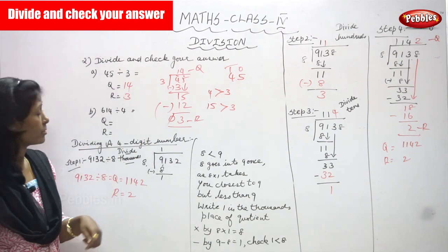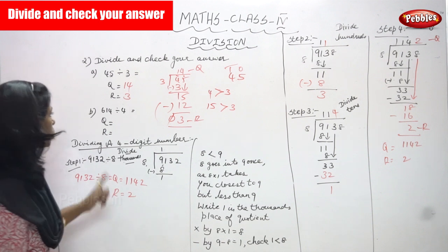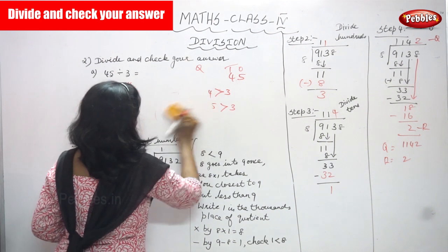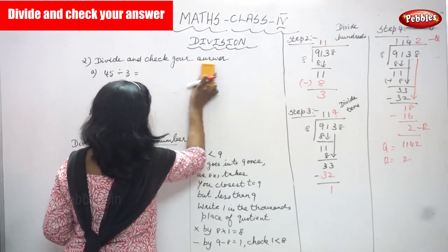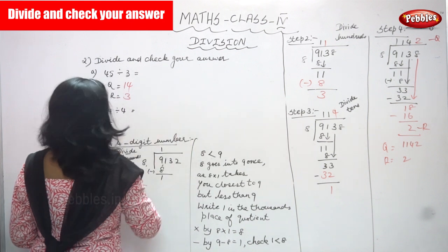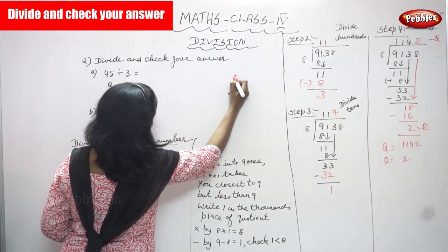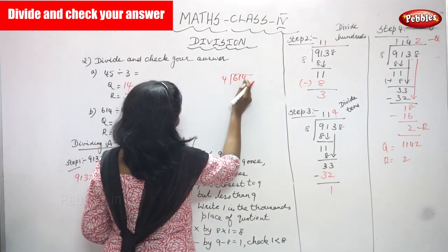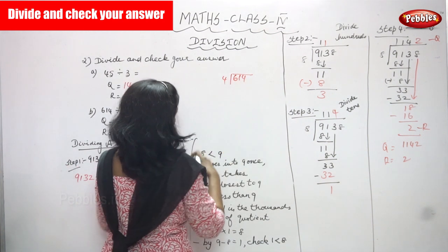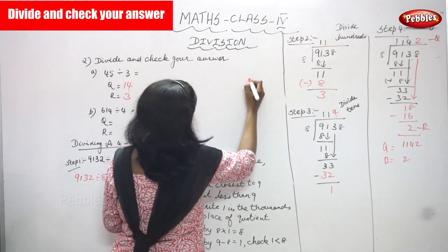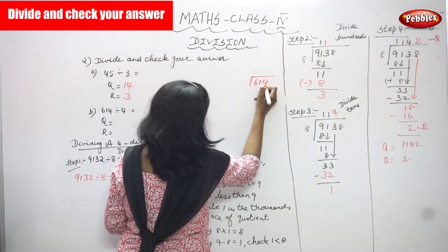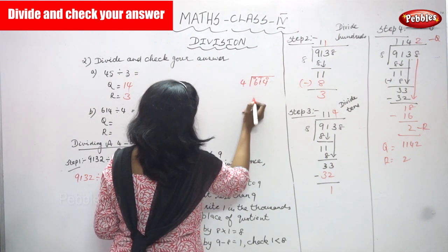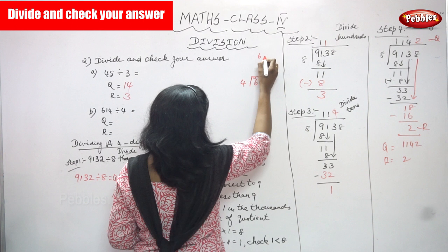Next sum: 614 divided by 4. The digit 6 is in the hundreds place. So 614 is divided by 4. First I will compare 6 with 4.